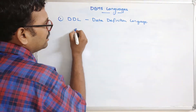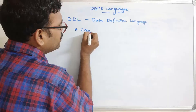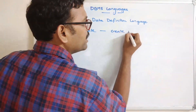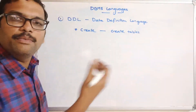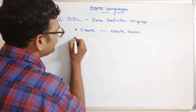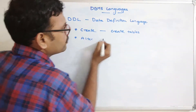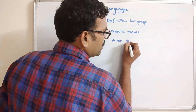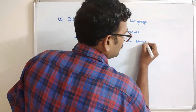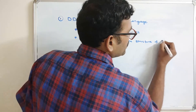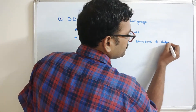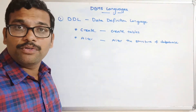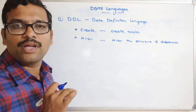The commands under DDL are: first, CREATE — this command is used to create databases, tables, or objects. The second one is ALTER — this command is used to alter the structure of the database, such as adding or removing attributes.